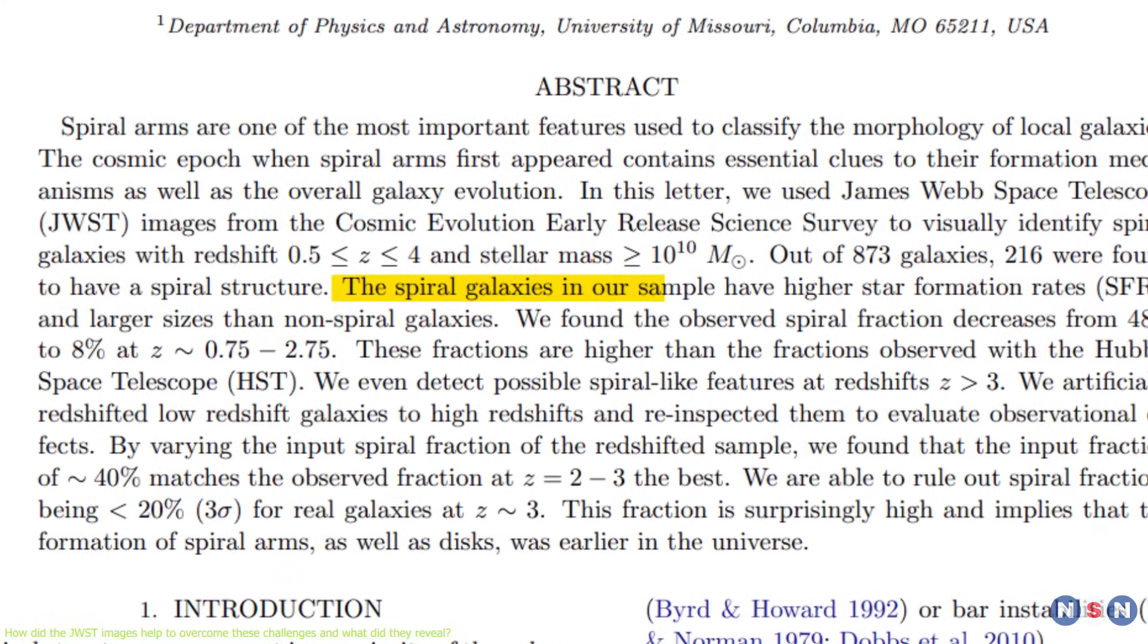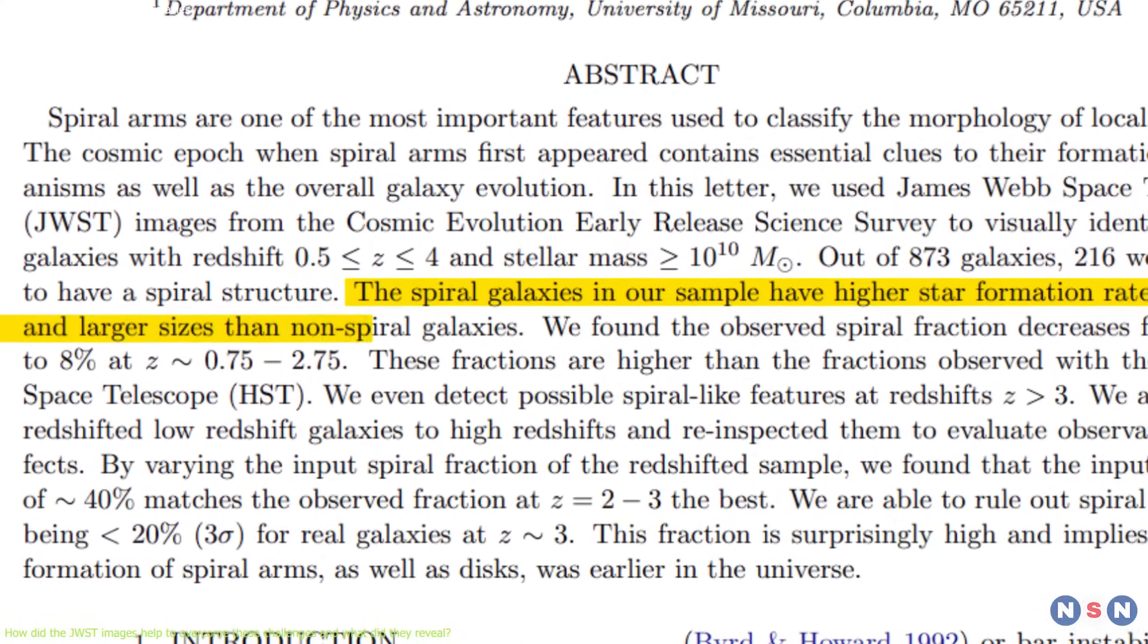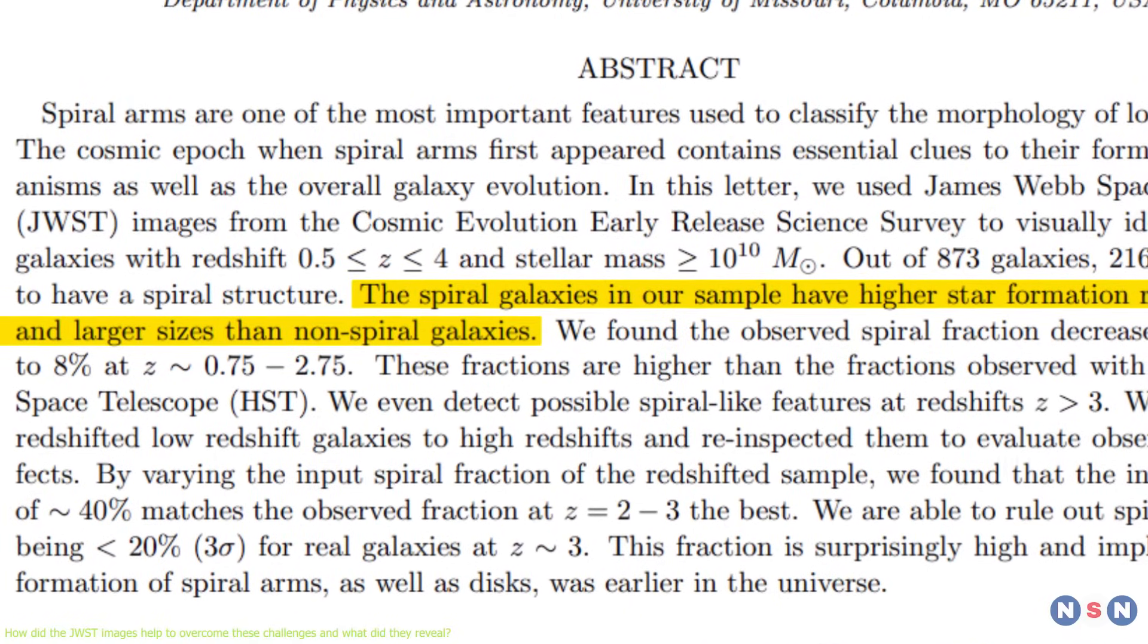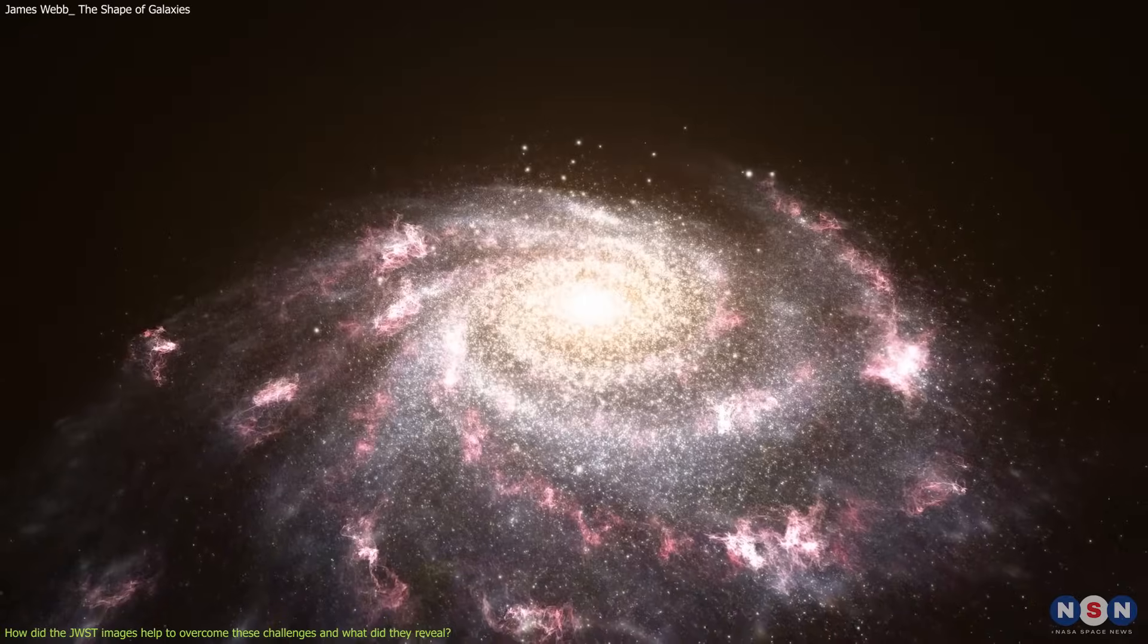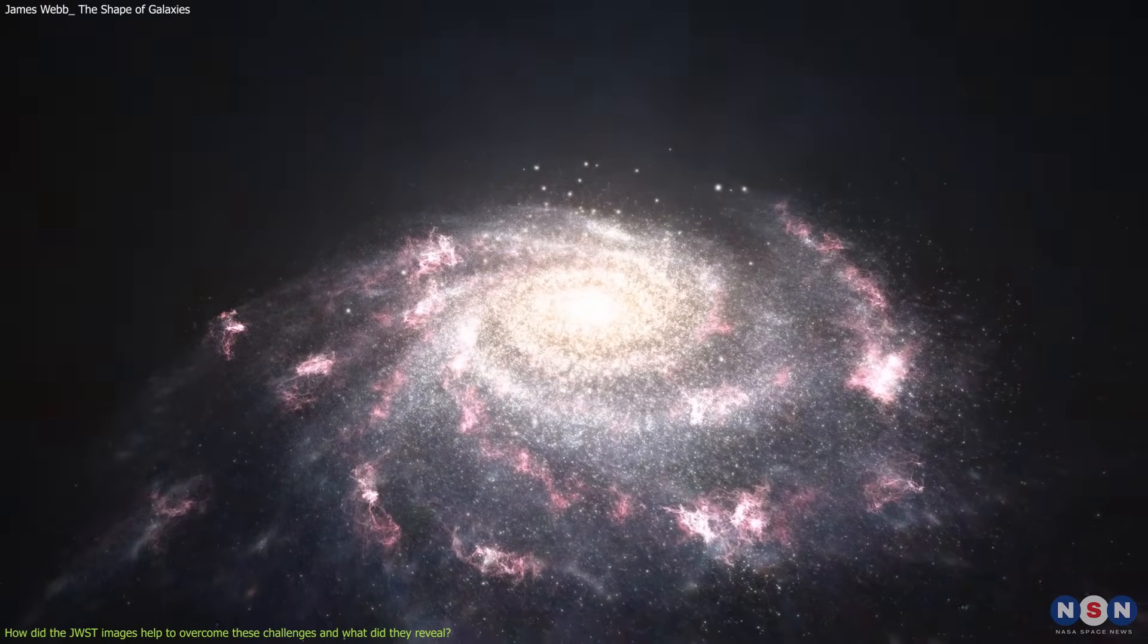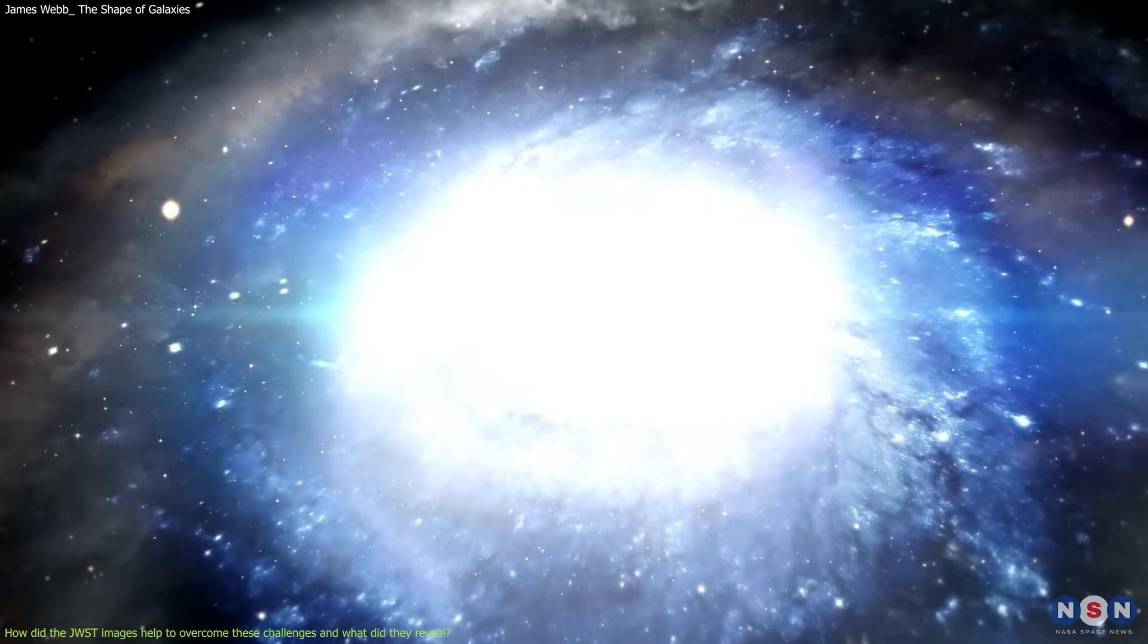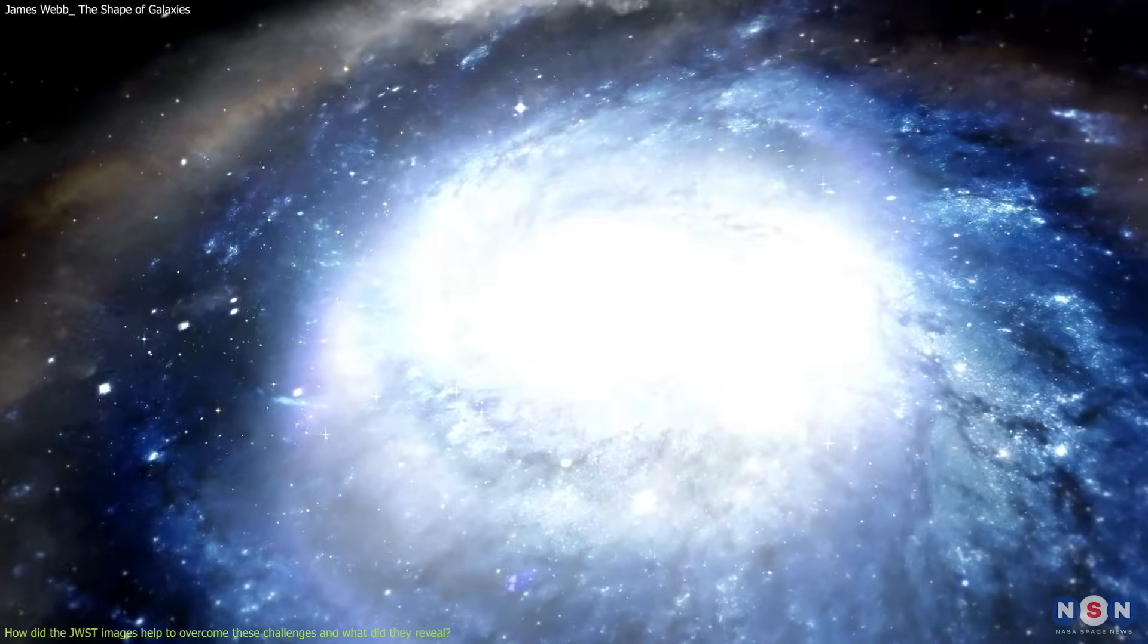They also found that the spiral galaxies in the sample had higher star formation rates and larger sizes than the non-spiral galaxies. The average star formation rate of the spiral galaxies was about 30 solar masses per year, while the average star formation rate of the non-spiral galaxies was about 10 solar masses per year.